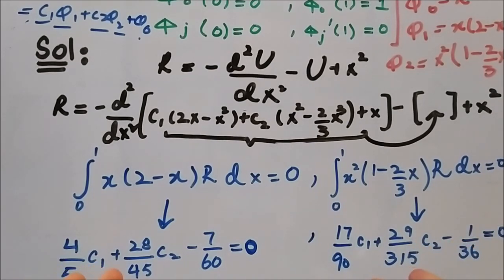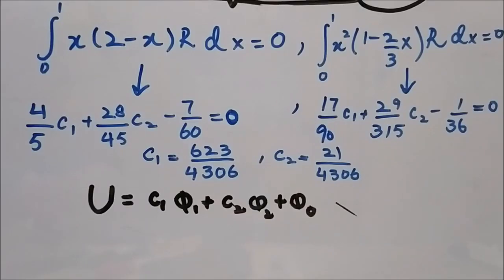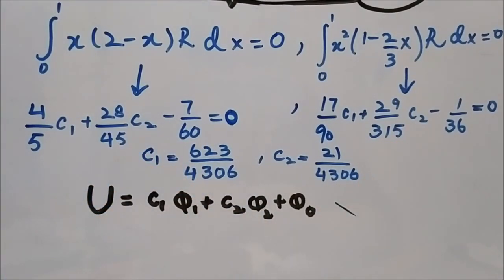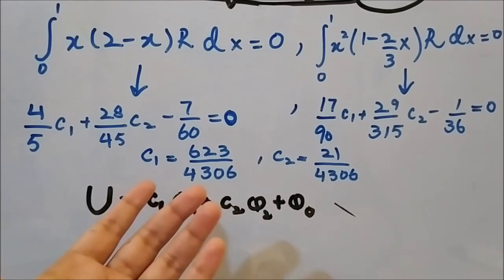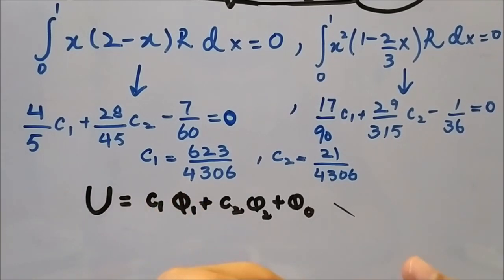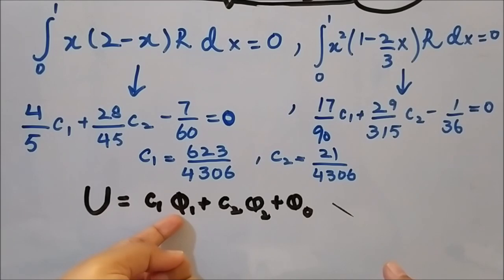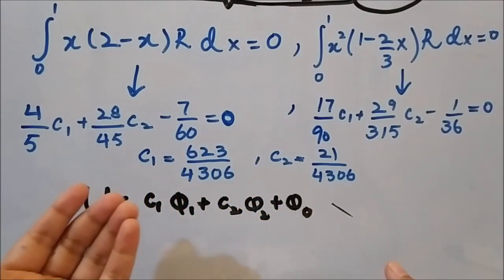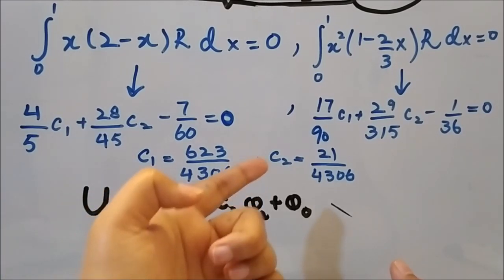We have two linear equations and two unknowns, so there is no difficulty in finding the values of c1 and c2. The values you will get after solving these two equations are: c1 = 623/4306 and c2 = 21/4306. The last step, as before, is to put these values of c1 and c2 into the approximate u function. We know phi1 = x² − x and phi2 = x² × (1 − 2/3x), the same functions used in the previous Petrov-Galerkin video.